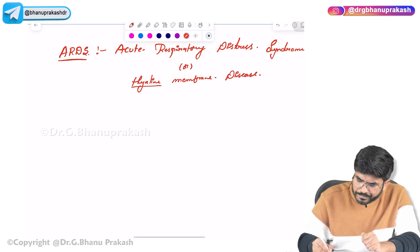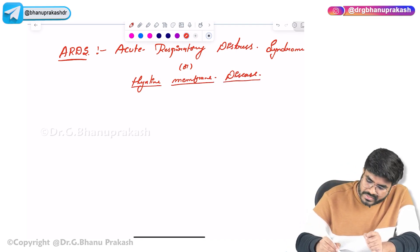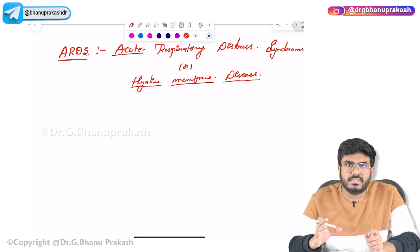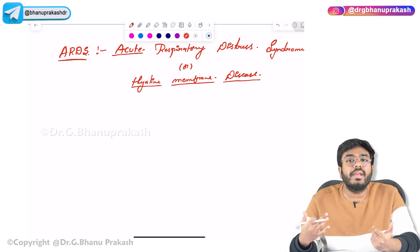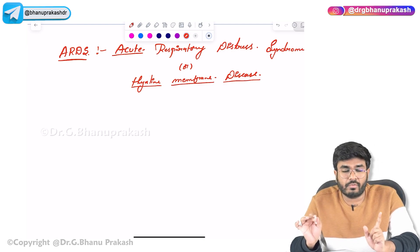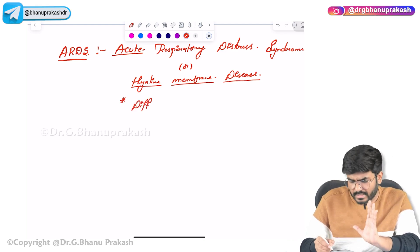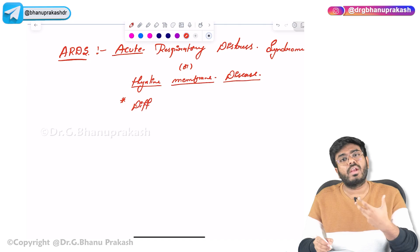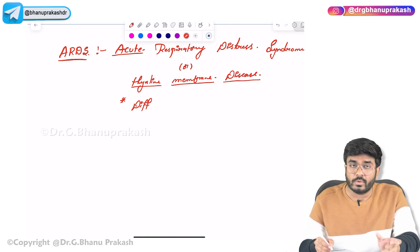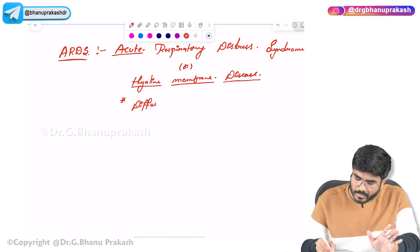What exactly is this hyaline membrane disease? The name itself tells us — it is an acute respiratory distress, meaning suddenly, within a very short period of time, there is respiratory distress happening. In ARDS, the first important point is there is diffuse alveolar damage — not in one particular place, but diffuse, entirely throughout the lungs.